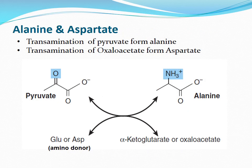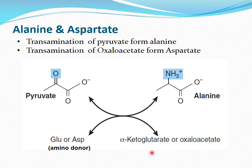In the biosynthesis of alanine and aspartate, the transamination of pyruvate forms alanine. The amino donor may be glutamate or aspartate, and the other product is alpha-ketoglutarate or oxaloacetate. The reaction is catalyzed by transaminase. The transamination of oxaloacetate forms aspartate.